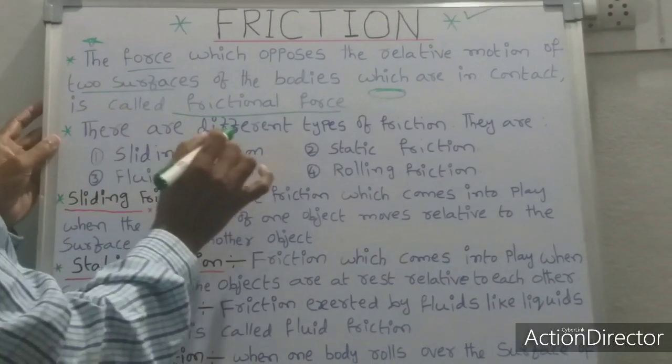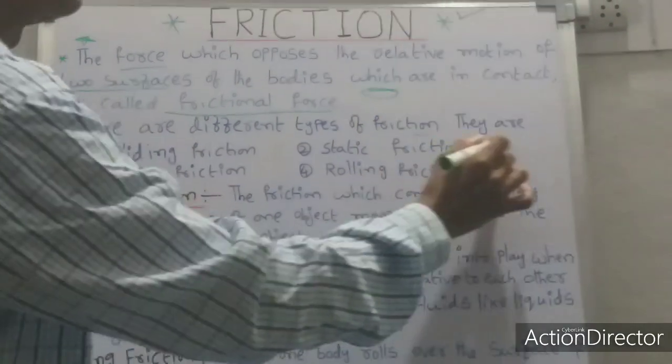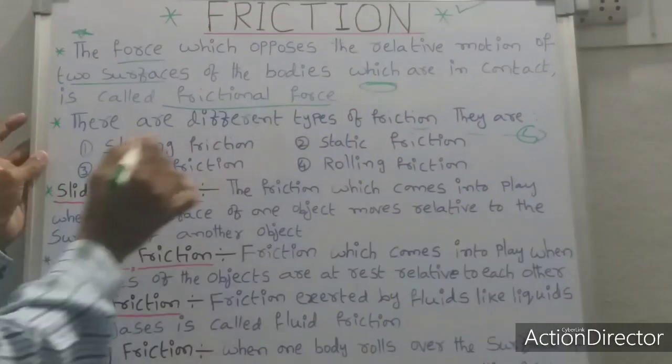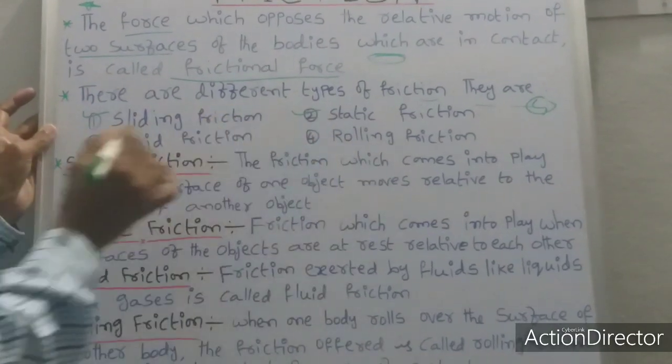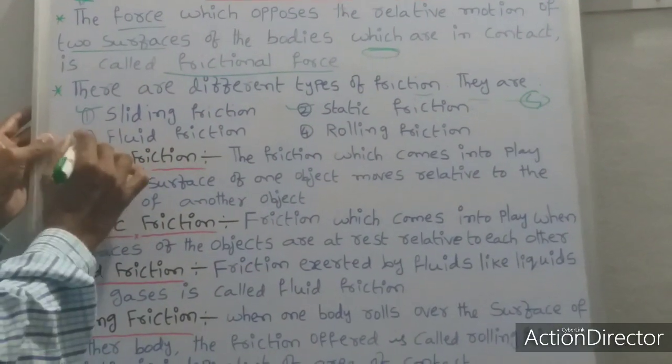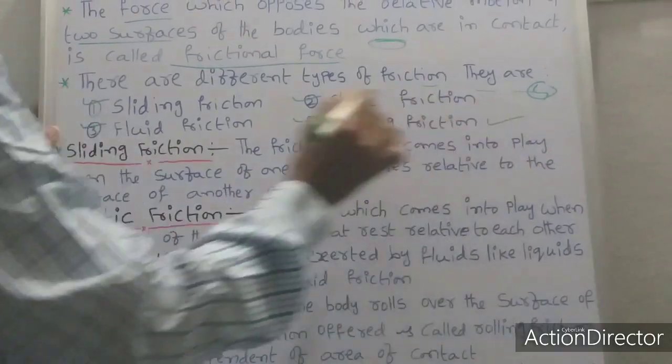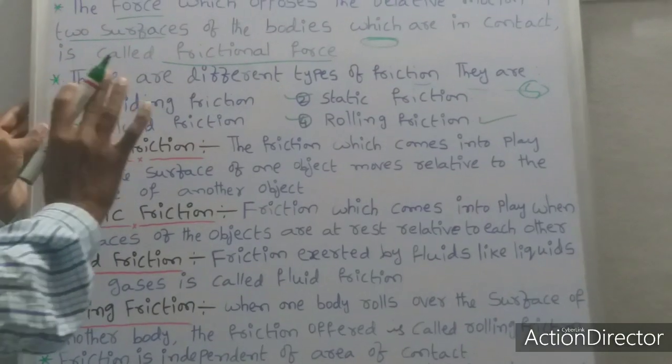There are different types of friction students. There are four types: sliding friction, second one static friction, third one fluid friction, fourth one rolling friction. Four types.